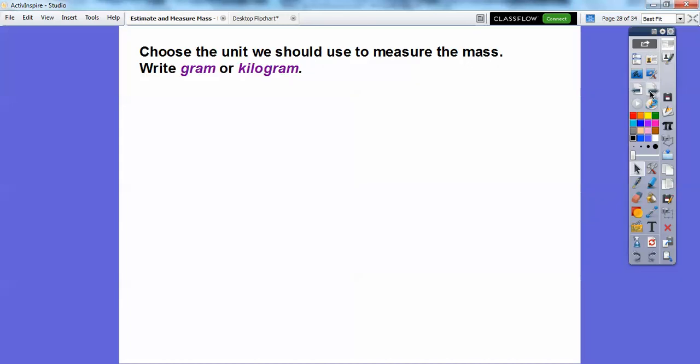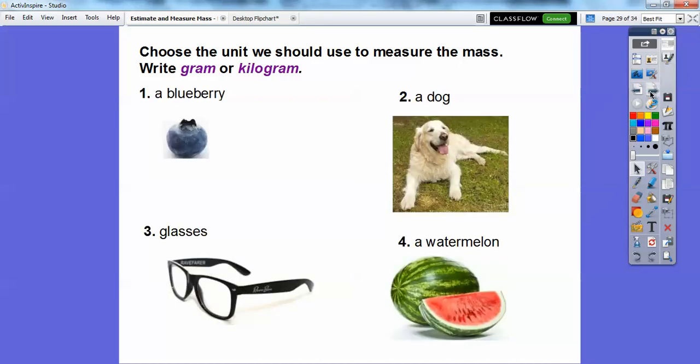Choose the unit we should use to measure the mass. Write gram or kilogram. So here's several items right here. We have a blueberry, a dog, glasses, a watermelon. The really light ones we're going to measure in grams and the heavy ones we'll measure in kilograms. Blueberries probably weigh about a gram.